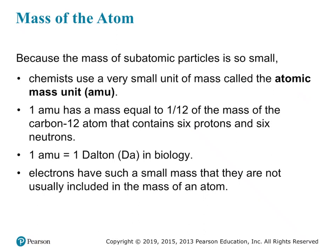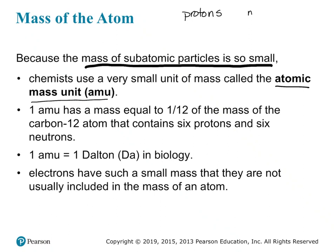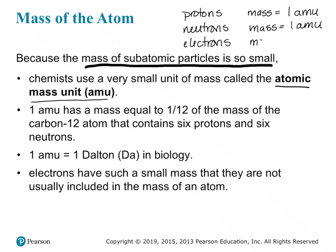Now let's talk about the mass of the atom. The mass of subatomic particles is really, really small. Chemists came up with a unit of mass called the atomic mass unit, or AMU. Protons have a mass of 1 AMU. Neutrons also have a mass of 1 AMU. And electrons have a mass of approximately 0 AMU — they have very, very little mass.